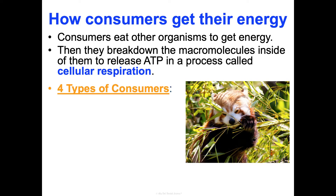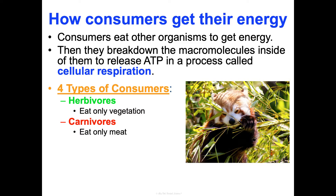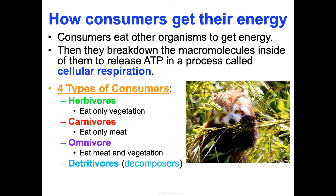There are four types of consumers — hopefully you remember these from elementary school science. We've got herbivores that eat only vegetation, carnivores that eat only meat, omnivores that eat both, and then detritivores, also known as decomposers. They eat dead materials, or detritus as some people call it.